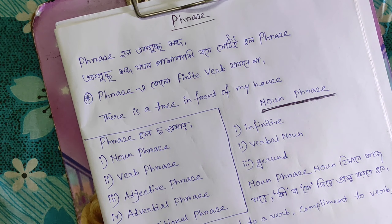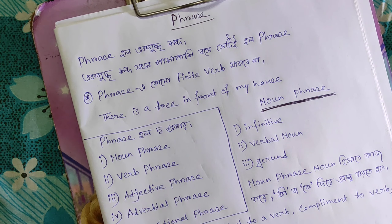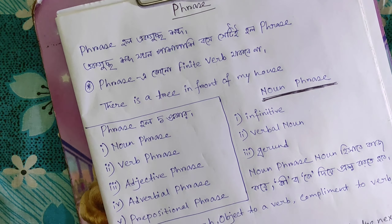When we read a phrase within a sentence, a sentence has a subject, verb, and object. For example, 'in the morning' or 'in the garden' — these are phrases. A phrase by itself does not have a subject and verb combination the way a sentence does.